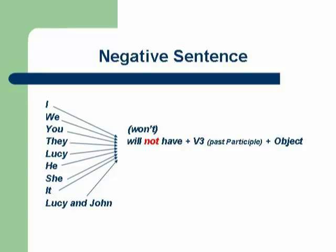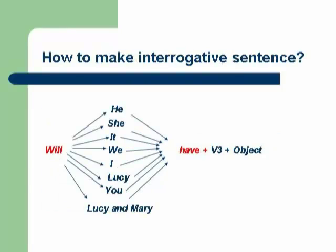How to make a negative sentence of future perfect tense: it is very simple — all you need to do is put 'not' in between 'will' and 'have.' Then the sentence will become: I will not have played cricket. Or you can use the contraction 'won't': We won't have played cricket. They won't have played cricket. Lucy won't have played tennis. He won't have played football. She won't have played tennis. It won't have played tennis. Lucy and John won't have played tennis.